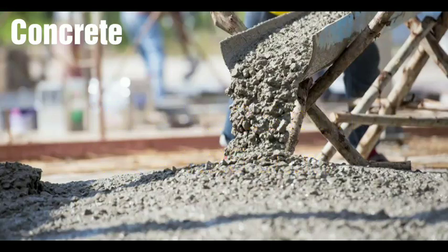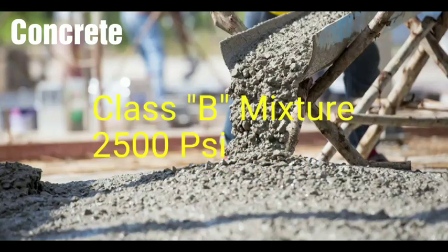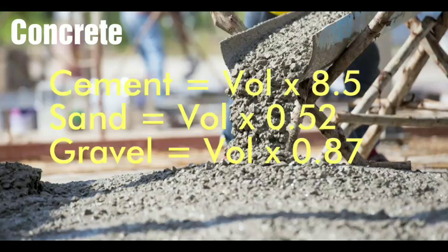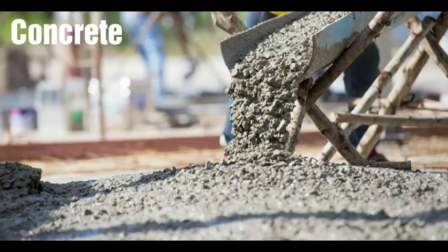Using a Class B mixture at 2500 psi design strength, we can find the quantity of cement by multiplying 8.5 by the volume of the proposed structure. For sand, multiply by 0.52. And for gravel, multiply by 0.87. So we are now calculating the quantity for cement, sand and gravel.